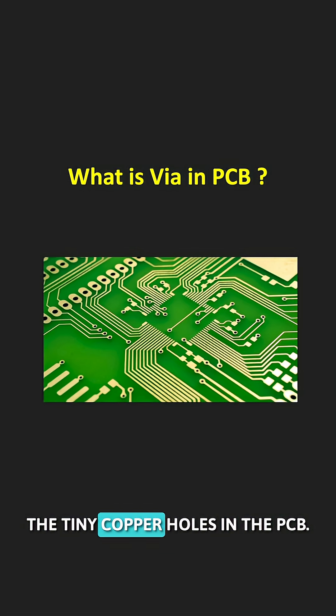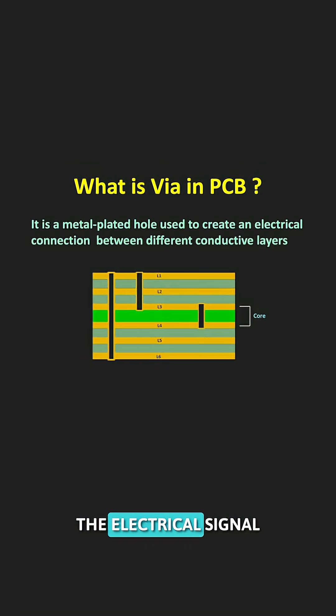You must have seen the tiny copper holes in the PCB. These holes are known as Vias.